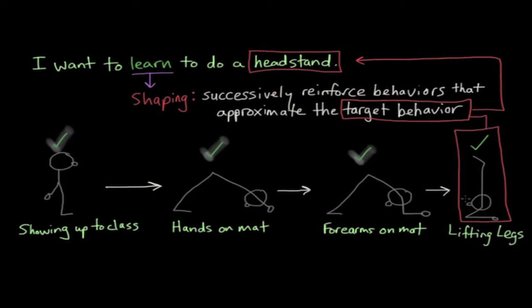But as you can see, this guy didn't just show up to class and perform the headstand. They had to gradually or successively learn to perform the target behavior. Now, I've been putting green check marks here to represent reinforcement. And reinforcement, it can be a physical object like money or prizes, but it can also be something that's intangible, like praise, for instance.